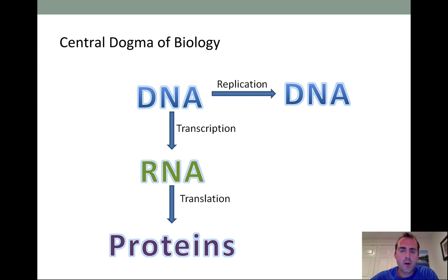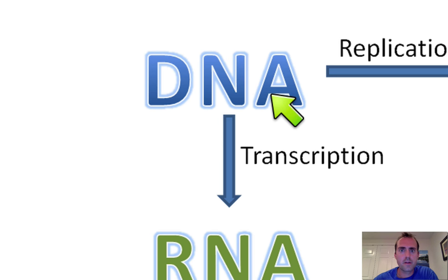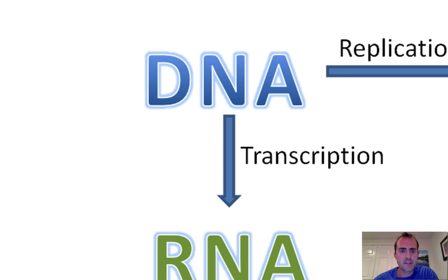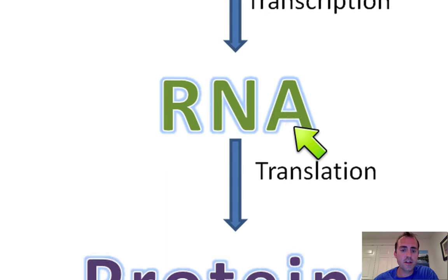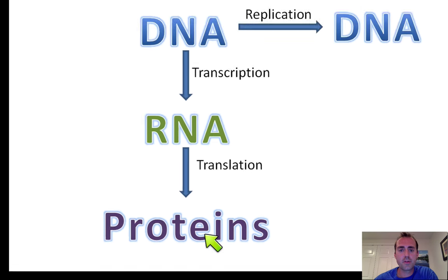When we start talking about DNA, we always have to start with the most important concept called the central dogma — the central dogma of biology. It's basically how all living things work, and we start with our DNA molecule. The central dogma states that DNA is used to make RNA, which is eventually used to make proteins. These proteins give us all of our characteristics — it's why you have brown hair, why you might have blue eyes, why you have a certain blood type. All your traits are governed by these proteins, but the instructions for making those proteins are found in our DNA.